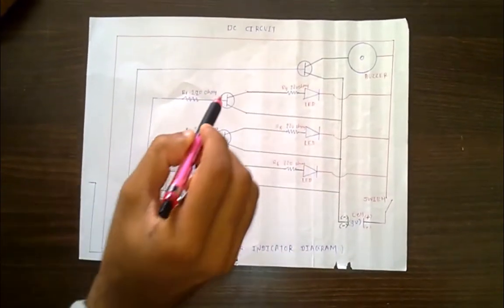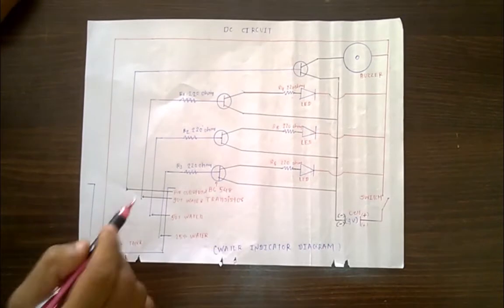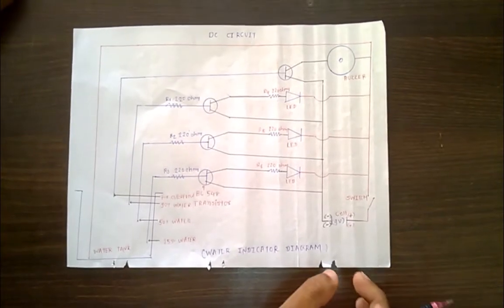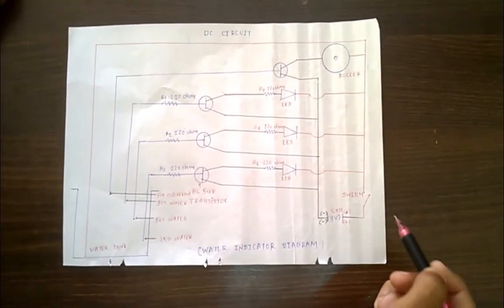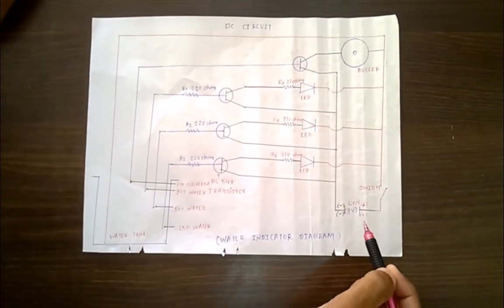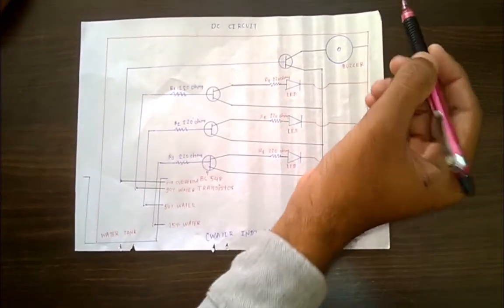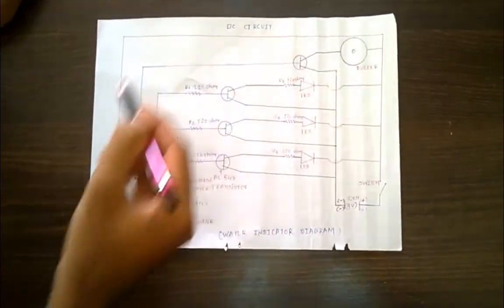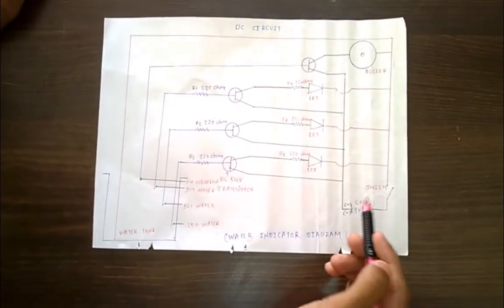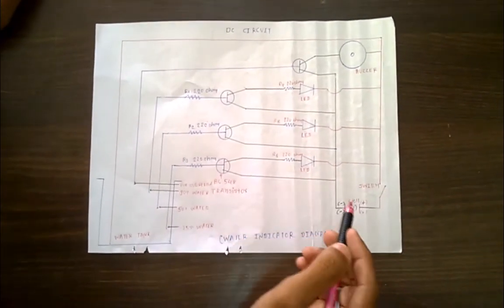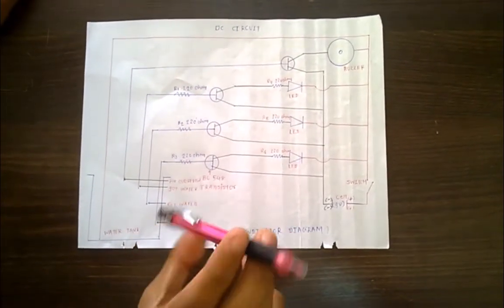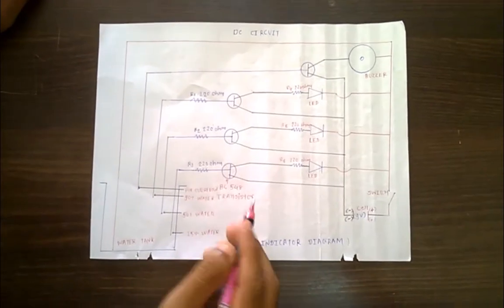We use a 9V DC battery with two points - plus point indicated with red wire and minus point with black wire. Plus point is connected to buzzer, LED, and water tank. Minus point is connected to transistor. The transistor model number is BC548, and the resistance value is 220 ohm.